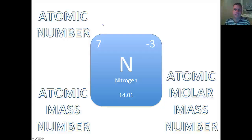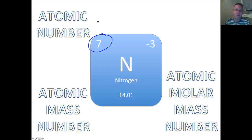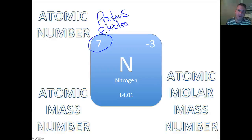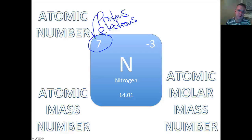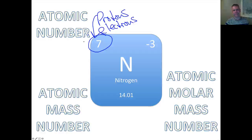The periodic table gives us information about each individual element. The first one is the atomic number — this is the number of protons, and electrons as well, though we're going to look at ions later. The number of protons is indicated by the atomic number, and this number never, ever changes for a specific element. That's basically its address — its placeholder on the periodic table.